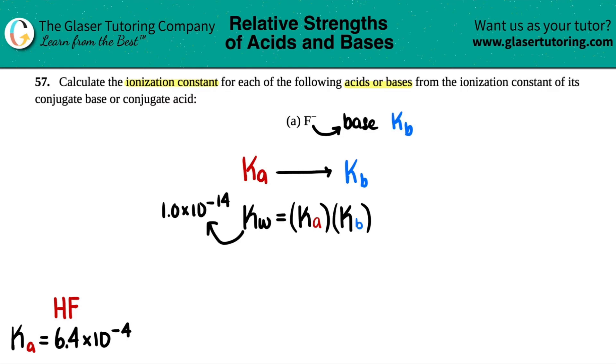So basically, we know the Ka value is 6.4 times 10 to the negative fourth, and we're basically just solving for Kb, which is X. So that's good. Let's do it. 1.0 times 10 to the negative fourteenth equals something times something.